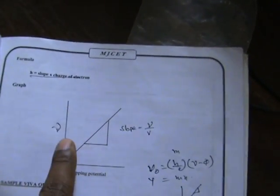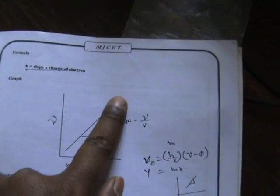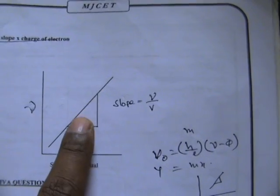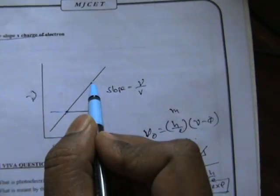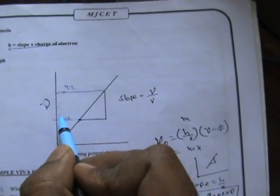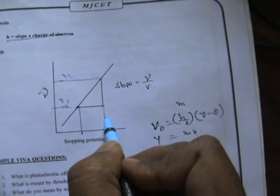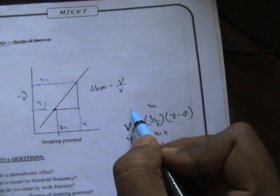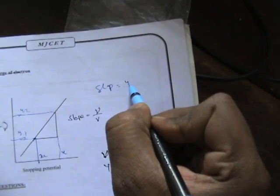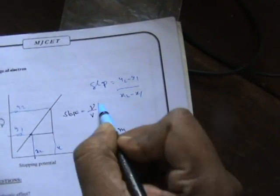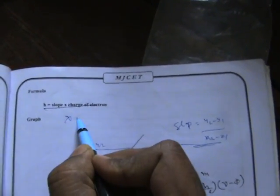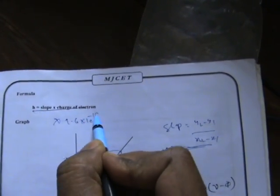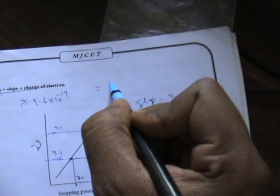Now I will plot a graph of stopping potential versus frequency. The points give a straight line. Using two points on the straight line, we find the slope. Slope equals (y2 − y1) / (x2 − x1). Then we multiply the slope by the charge of the electron, which is 1.6 × 10^−19, to get Planck's constant.